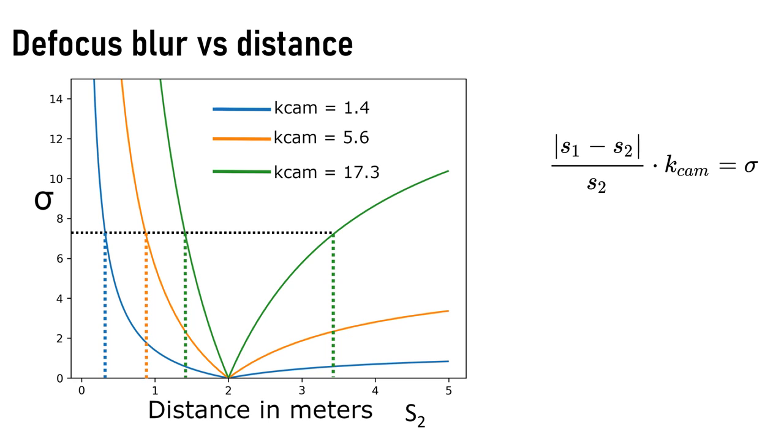The gist of this relationship can be represented with the equation on the right-hand side. S1 represents the focal distance, which is the distance that the camera is focused at. As we can see from this relationship, the relationship between S2 and the blur depends on the camera parameter Kcam. This camera parameter depends on the camera we use, so it's camera dependent.